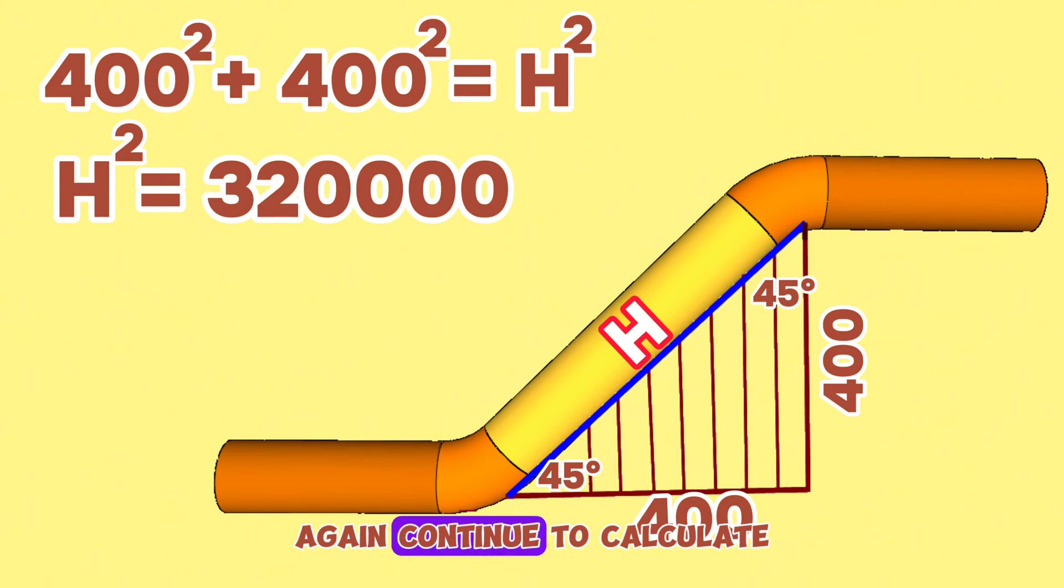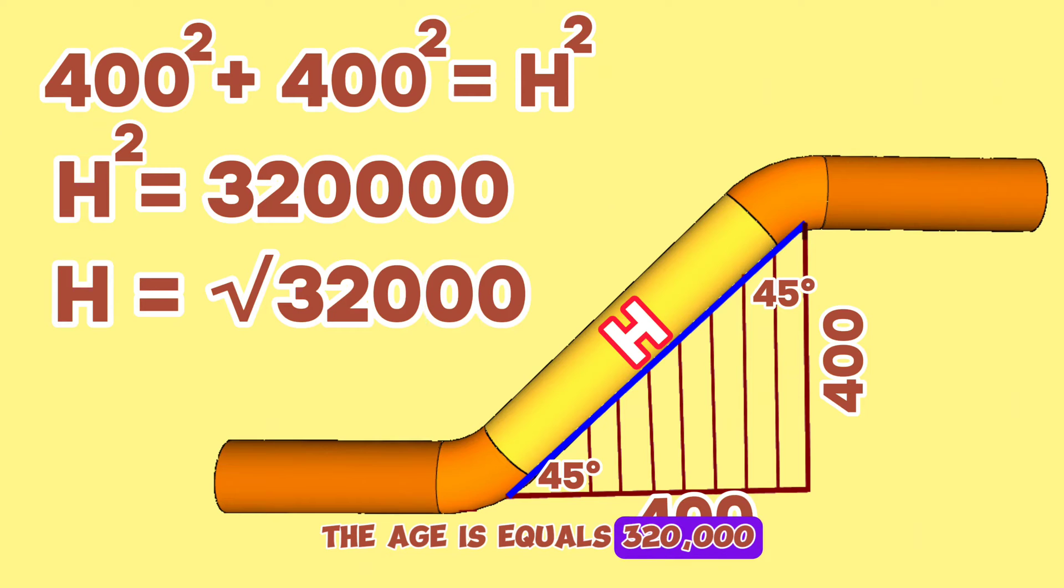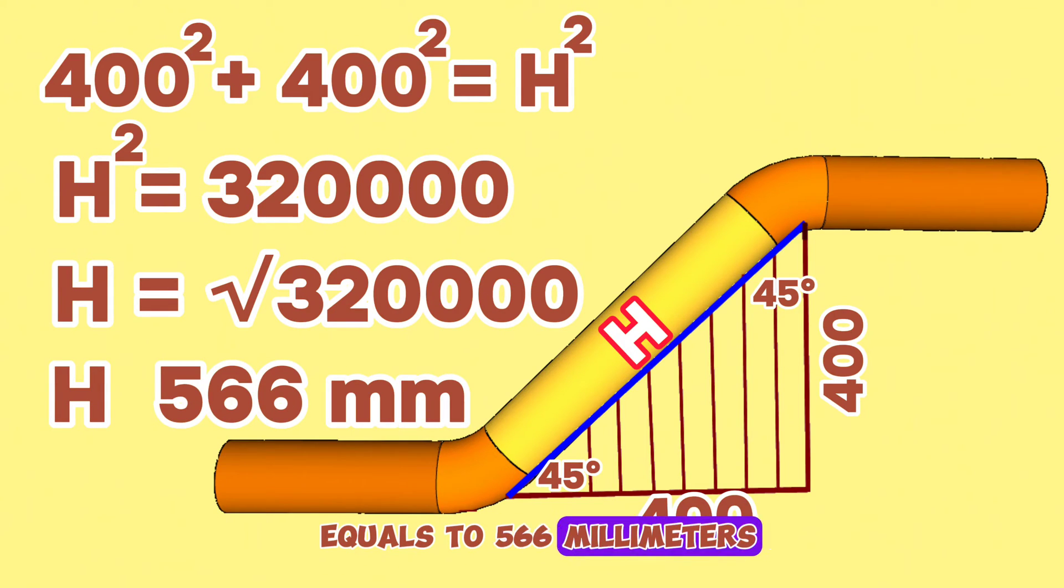Continuing the calculation, H equals the square root of 320,000. Using a scientific calculator, we find H equals 566 millimeters.